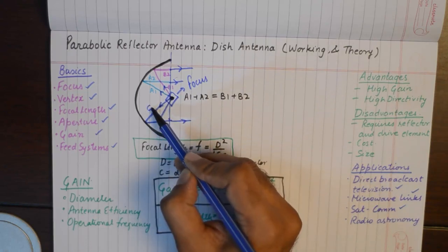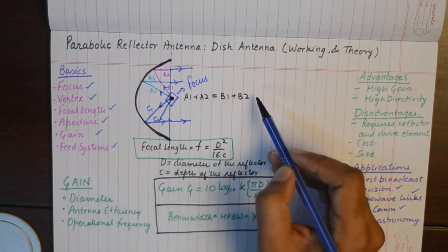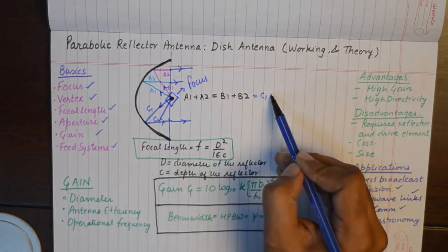For example, a1 plus a2 is equivalent to b1 plus b2, and c1 plus c2.